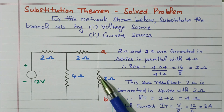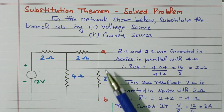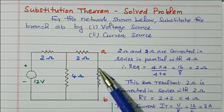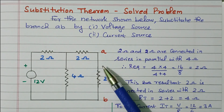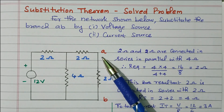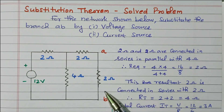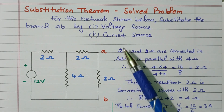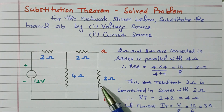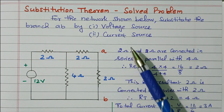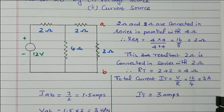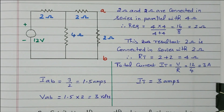So we need to replace this branch — terminal AB — by a voltage source and current source. The current flowing through branch AB and the voltage across branch AB should be maintained. So we need to find what is the current flowing through AB and what is the potential across AB. Accordingly, we can replace with a voltage source and current source.